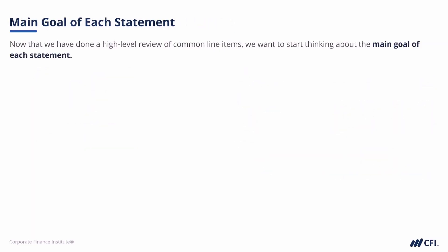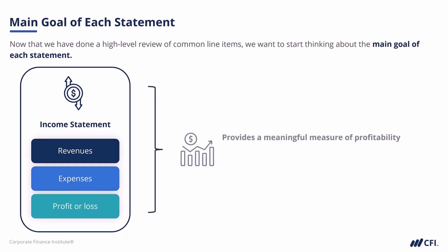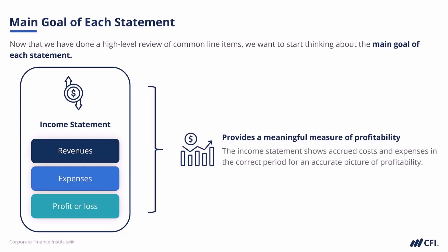While it's useful to list out many of the line items that occur on these statements, we want to start thinking about what is the main goal of each statement. If we are thinking about the company's income statement and all of the line items it contains, the main goal is to provide us with a meaningful measure of the company's profitability. We carefully accrue revenue into the correct period and match all the costs to that accrued revenue so that as we go down the income statement, we are putting together a meaningful measure of profitability. The income statement can help us measure profitability, but it really doesn't tell us anything about how the company manages cash flow — that is the job of the cash flow statement.